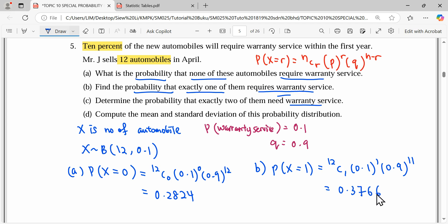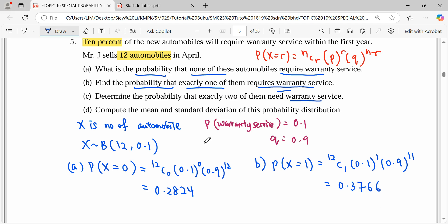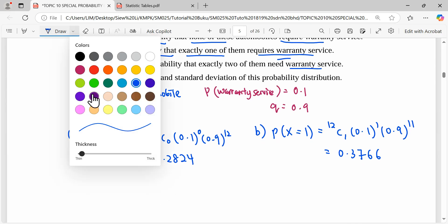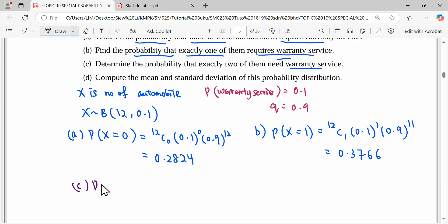Then continue for question C: probability that exactly two of them need service. So X equals 2, which is 12C2 times p power of r is 2, times q is 0.9 power of 10. So this is 0.2301.